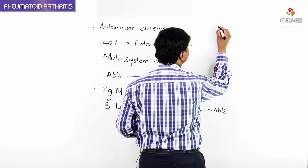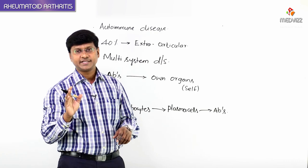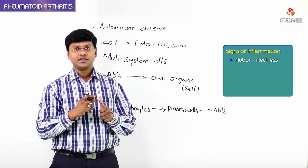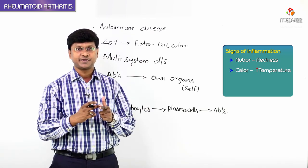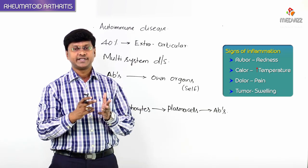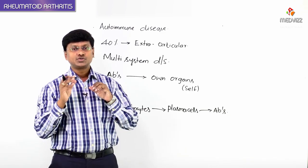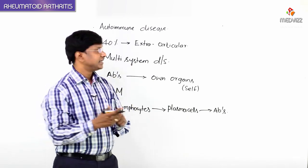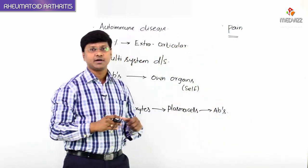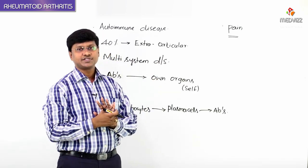The basic problem in rheumatoid arthritis — 'itis' means inflammation. The signs of inflammation are: rubor (redness), calor (increase in temperature), dolor (pain), and tumor (swelling) of the inflamed area. All these signs will be present in the inflamed joint. The patient is most concerned about pain.